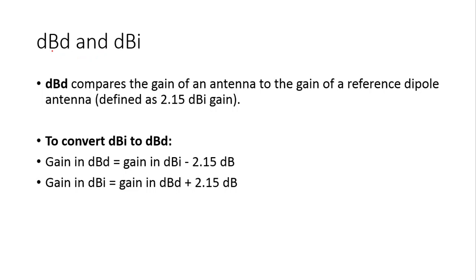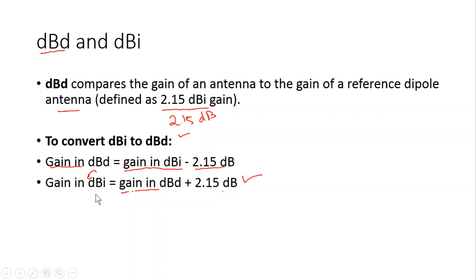dBd is the gain of an antenna relative to a reference dipole antenna. The gain of a dipole antenna is 2.15 dBi. To convert from dBi to dBd, subtract 2.15. To convert from dBd to dBi, add 2.15. That is all for today — if you like this video, please subscribe to the channel Technically Explained. Thank you.